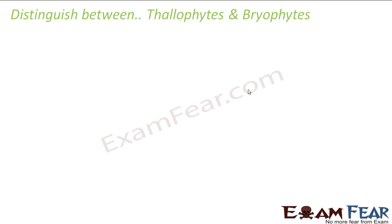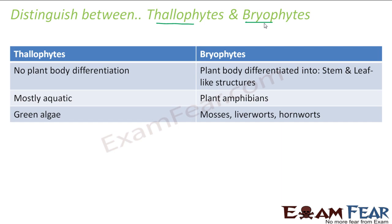Distinguish between thallophytes and bryophytes. Thallophytes have no plant body differentiation, whereas bryophytes have plant body differentiated into stem and leaf-like structures. Talking about habitat, thallophytes are mostly aquatic, while bryophytes are plant amphibians — they can live on land but still need water to complete their life cycle. Examples of thallophytes are algae. Examples of bryophytes are mosses, liverworts, and hornworts.